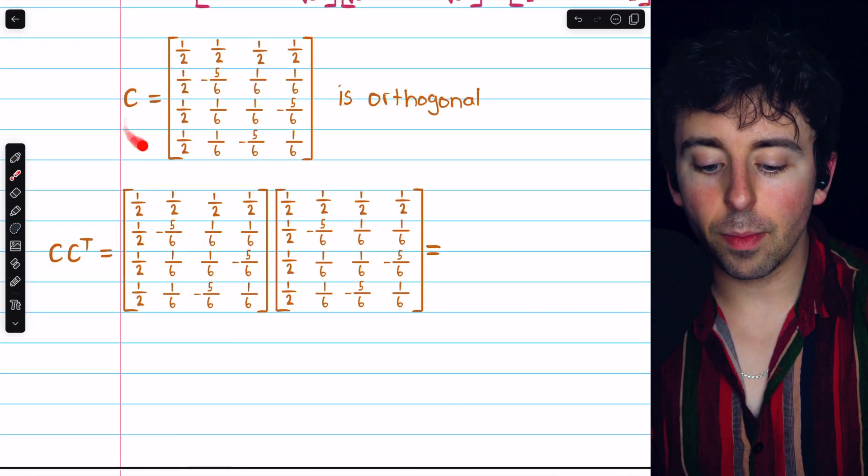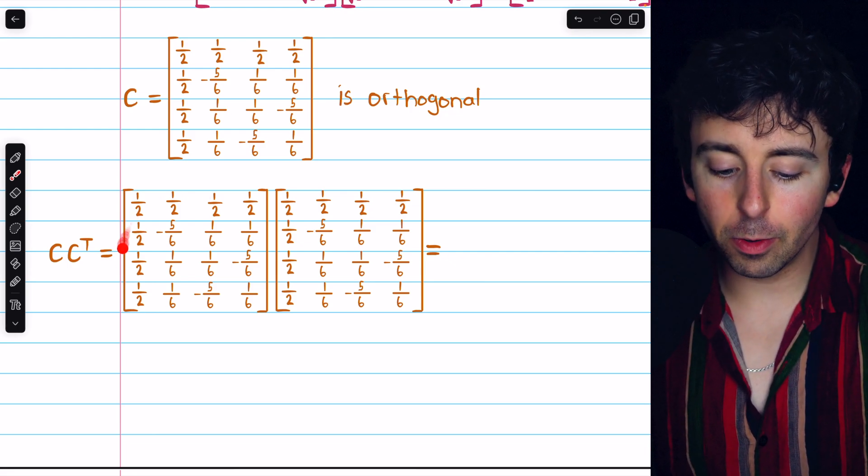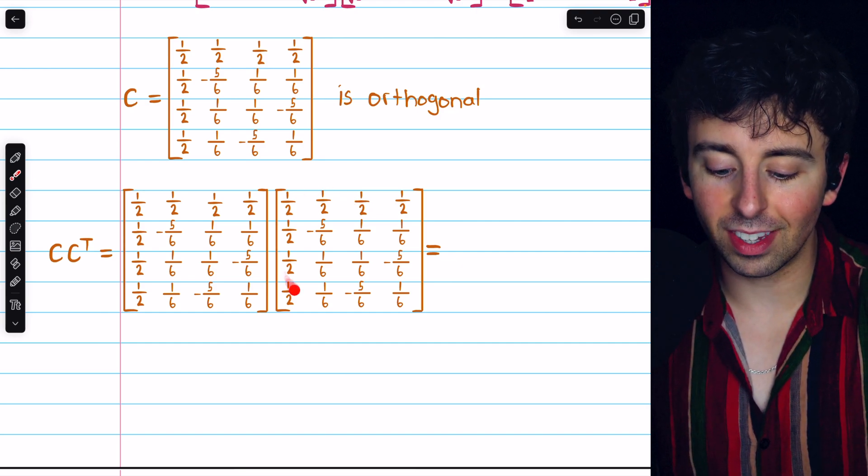Finally, we have the matrix C, which we will see is orthogonal. Here's the matrix C, and swapping its rows and columns, we have C transpose.